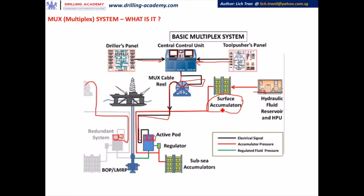Power fluid is supplied from surface down to the selected pod, and also from the subsea-mounted accumulators — these are the subsea-mounted accumulators on the LMRP and on the stack. The surface stream and the subsea streams are drawn together into one common stream. This common stream goes to the regulator, which regulates it down to the appropriate working pressure for each BOP function — such as 1,500 psi for rams and connectors, 500 to 1,500 psi for annular and choke and kill line valves. However, the blind shear ram operates at full system pressure: 3,000 or 5,000 psi depending on the system.